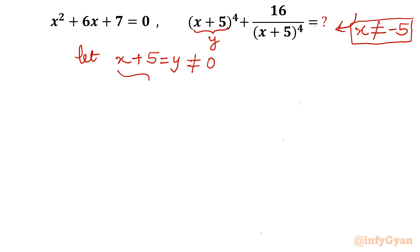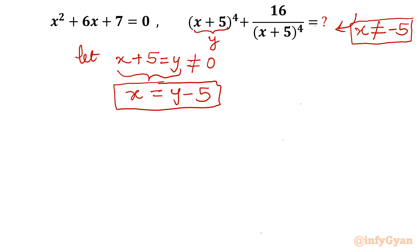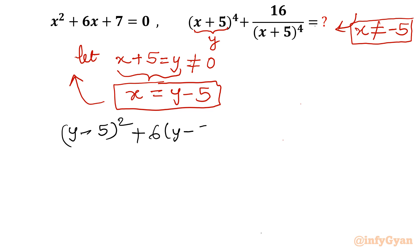From the substitution x + 5 = y, we get x = y − 5. Now I will substitute this into the quadratic equation, giving us (y − 5)² + 6(y − 5) + 7 = 0.